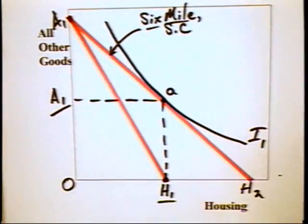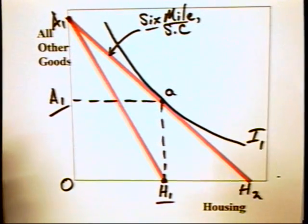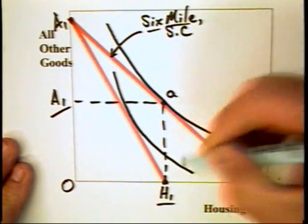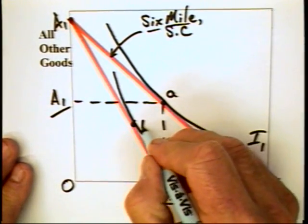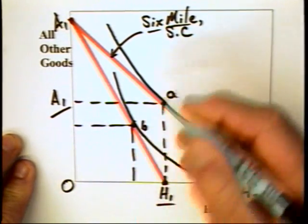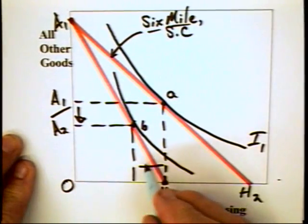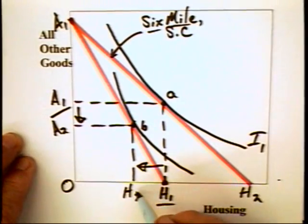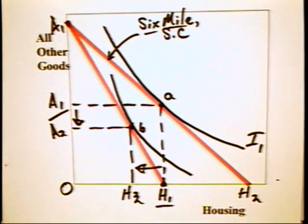This means that the budget line the individual will face if he's given only $100,000 in compensation is going to extend from A1 to H1. And of course, this means if all your firm does is replace the individual's salary, the individual will be moved from point A to point B, which means that the individual will very likely end up buying less of all other goods and less housing, which also means that the individual will very unlikely take the job.